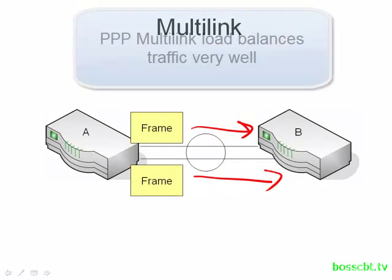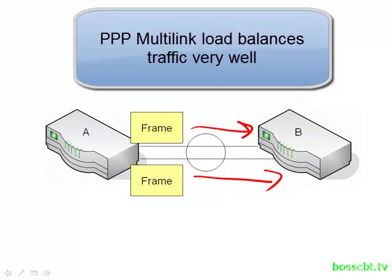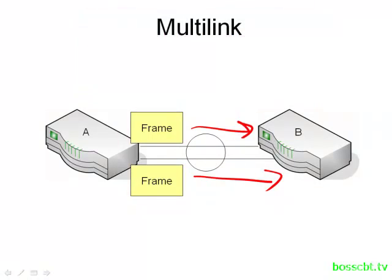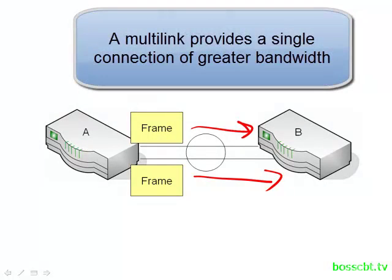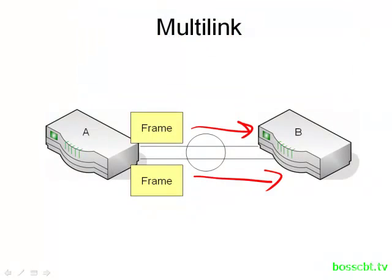We're achieving very good load balancing — half of the frames go on one circuit, the other half go on the second circuit, and we're doing that at the same time. We've also doubled our bandwidth between the two routers; instead of one serial connection, we're using both. Finally, with PPP multi-link we also reduced the size of our routing tables because now OSPF and EIGRP are only looking at one connection as opposed to two, so there's less information in their topological databases.